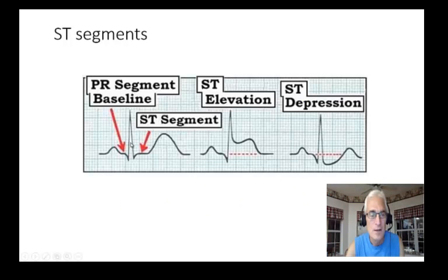Next up, ST segments. Again, there's the P-wave. The P comes to the QRS. Then the S to the T is the ST segment. How do you determine what's normal? See this red arrow pointing to the PR? The PR segment is the baseline, or what we call the P-Q junction. That line between the P and the Q is called the baseline. The ST segment should be at that same level. If it's a millimeter up, that's ST elevation. Millimeter down, ST depression.